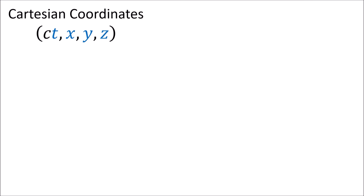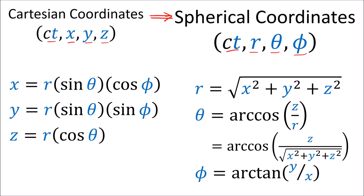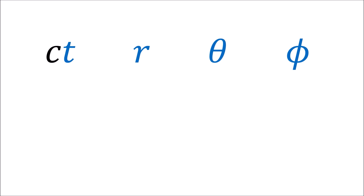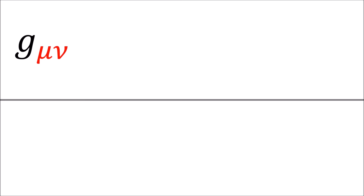Since we're dealing with a spherically symmetric mass, it's better to deal with spacetime in spherical coordinates. So instead of using the spacetime coordinates ct, x, y, z, we'll use ct, r, theta, phi, where r is the radius, theta is the angle from the north pole or co-latitude, and phi is the angle of rotation around the vertical axis or longitude. We'll sometimes denote these four spacetime coordinates using the 0, 1, 2, 3 indices, where 0 indicates time and 1, 2, 3 are the spatial dimensions.